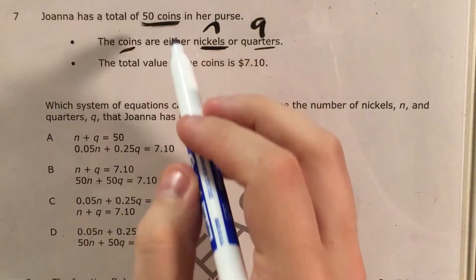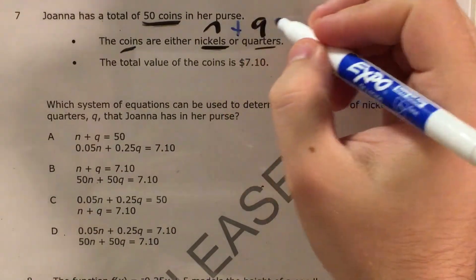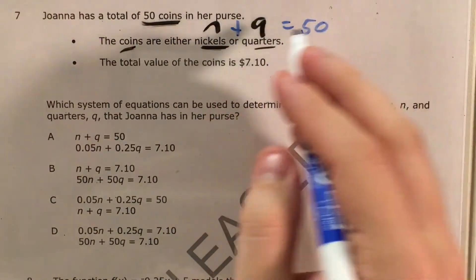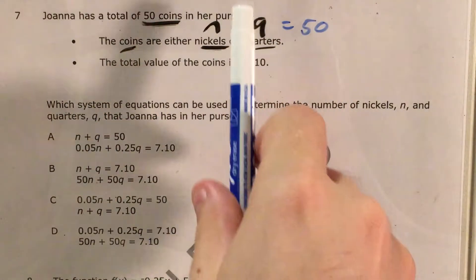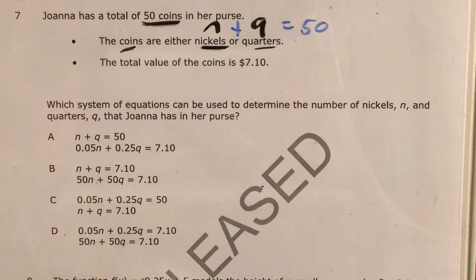But it does say that since there are 50 coins and the coins are nickels plus quarters, we can very easily assume that the number of nickels plus the number of quarters equals 50. I know that looks like a 9, it's a Q. Sorry about that. So now that we have that the number of nickels plus the number of quarters equals 50, that's one of two equations that we're actually going to have to set up in order to be able to solve a system like this.